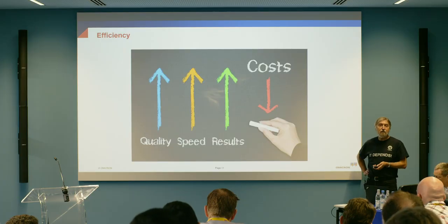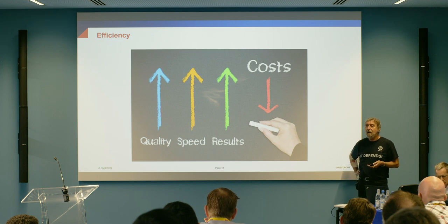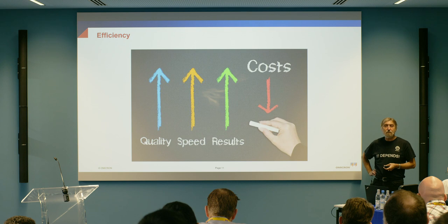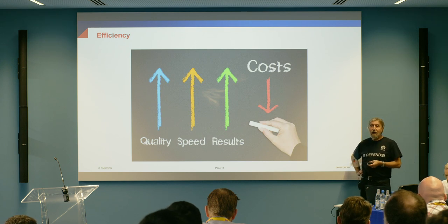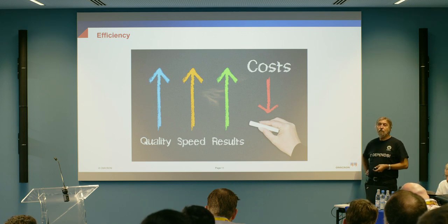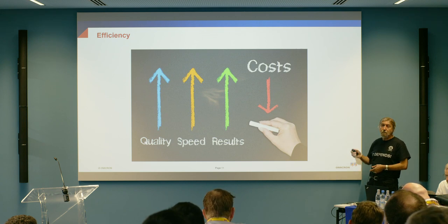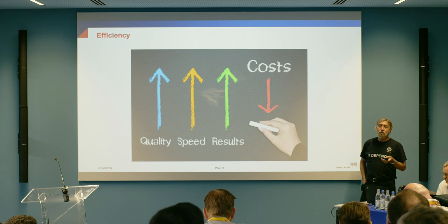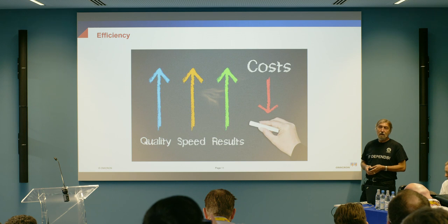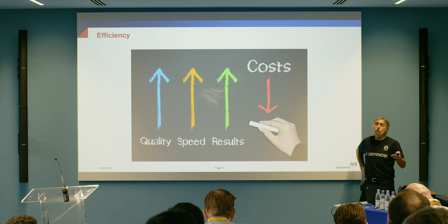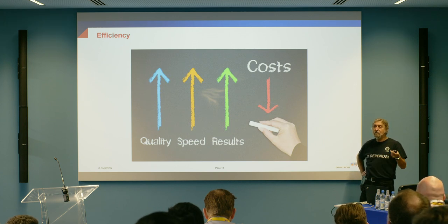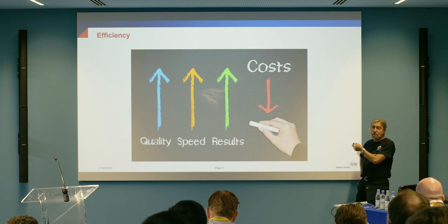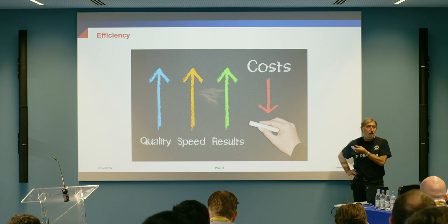At the same time, there is the requirement for efficiency. It means we need to improve the quality of everything that we deliver, improve the speed of delivery of the project, and improve the speed of performance of the protection, automation and control systems. The results we accomplish have to be the most positive possible, while reducing costs. When we talk about reducing costs, we can map pretty much any criteria to cost — if you reduce the time for maintenance testing, if you reduce traveling, if you reduce the money you have to spend — all of this summarizes as reduced costs and improved efficiency.